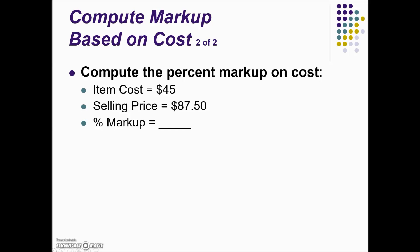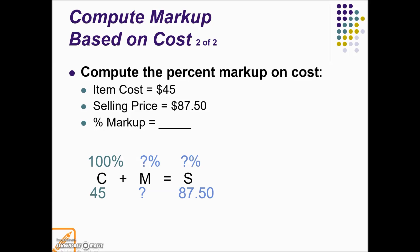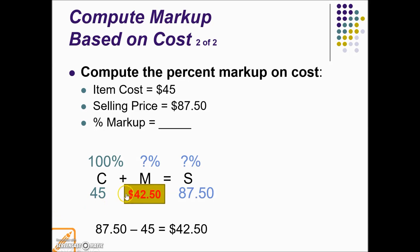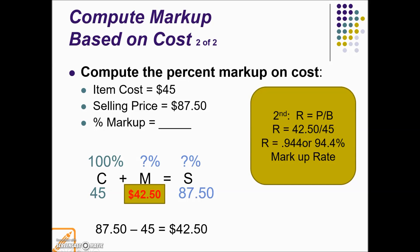In this next item, very similar to the last one, we're given the cost and the selling price and asked for the percent markup. Using the foundation formula, and because this is based on cost, that determines where the 100% base falls. We know cost and selling price, and again we can't directly find our percent markup until we know the markup amount. So taking selling price minus cost gives us our markup amount. Then, part divided by base and converted to a percentage gives us a markup rate of 94.4%.